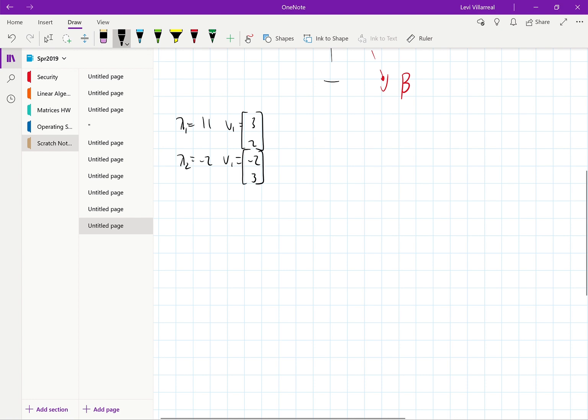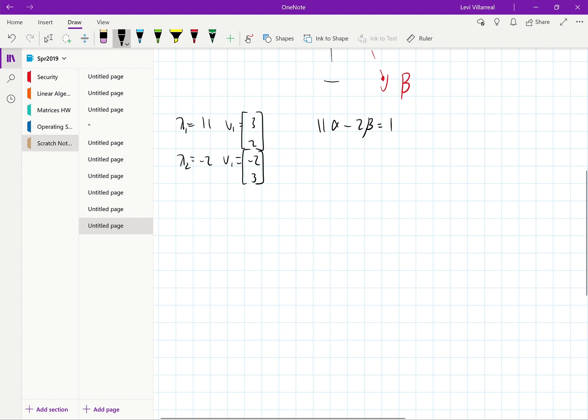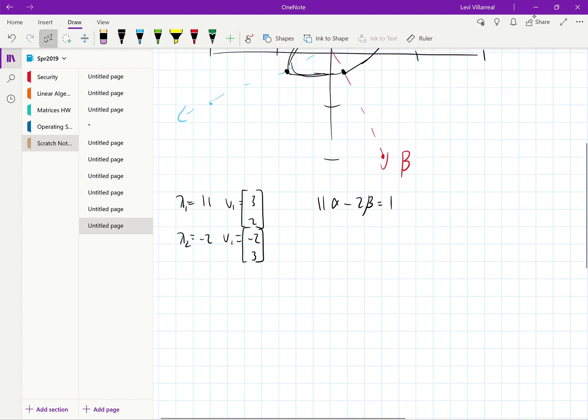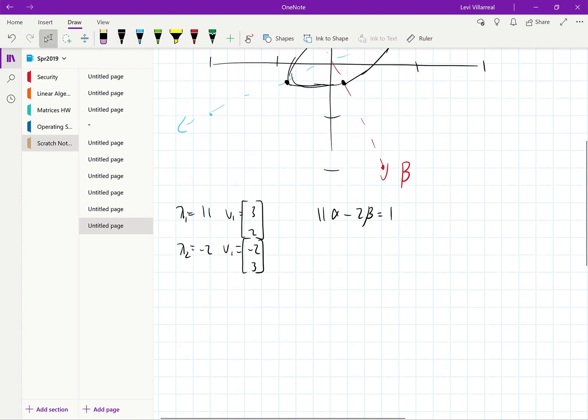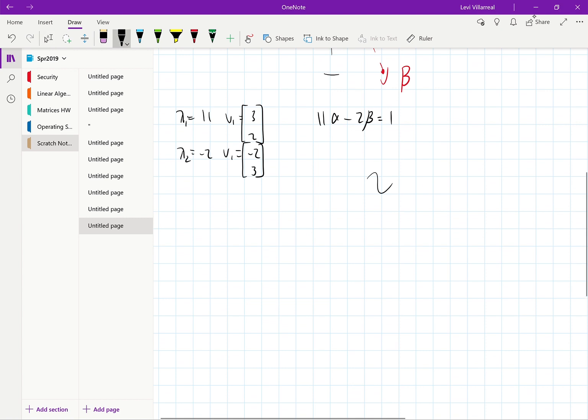So the same thing as before, we're going to set up our equation. So that will be 11 alpha minus 2 beta equals 1. And it doesn't matter which eigenvalue you choose to come first, like I said, because it'll end up being the same because your axes are based on the coordinate matrices.